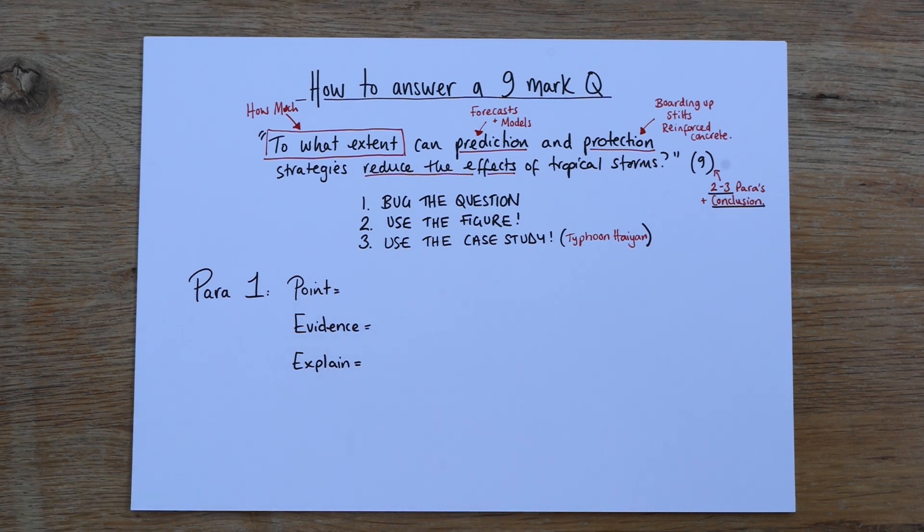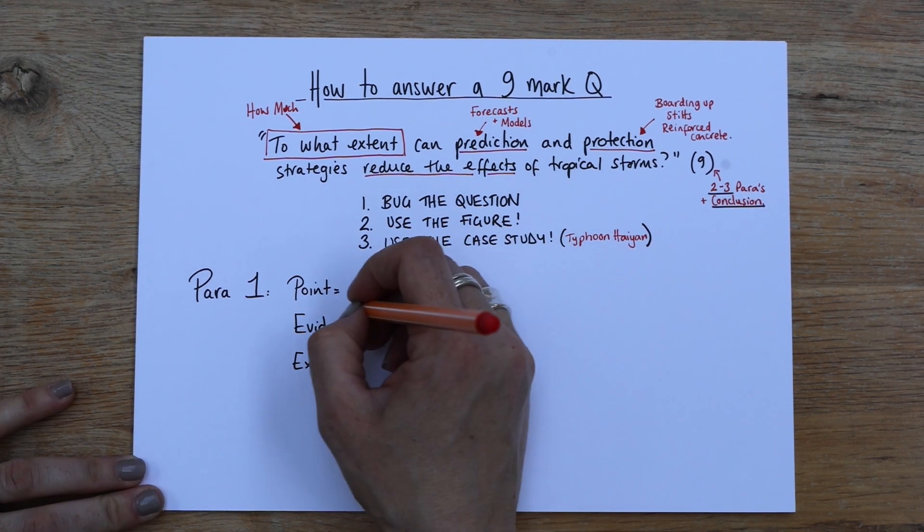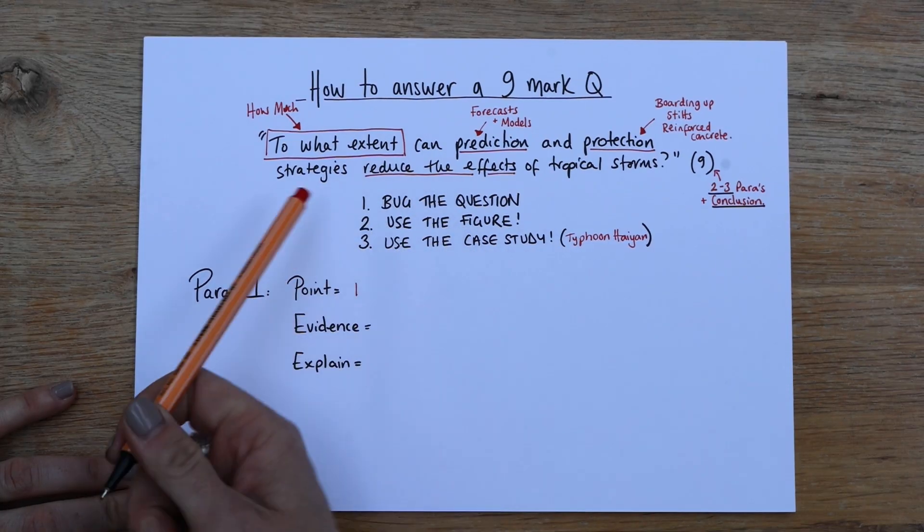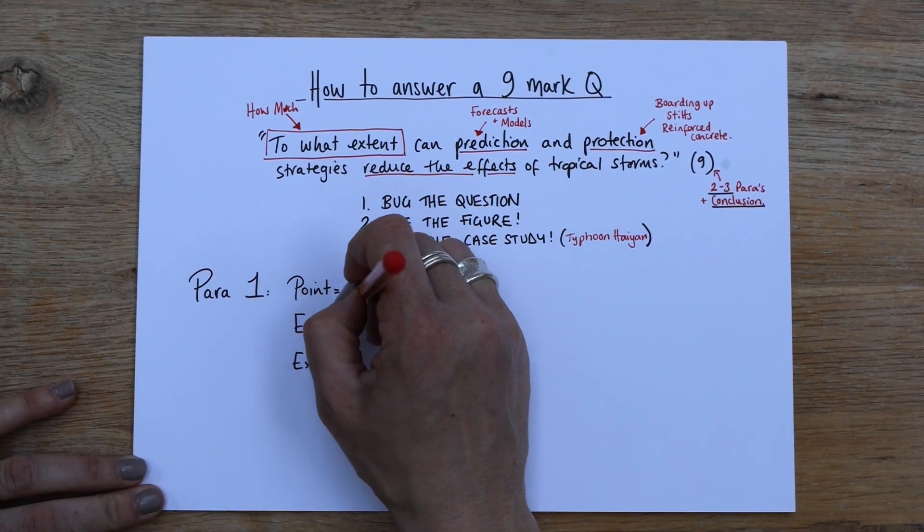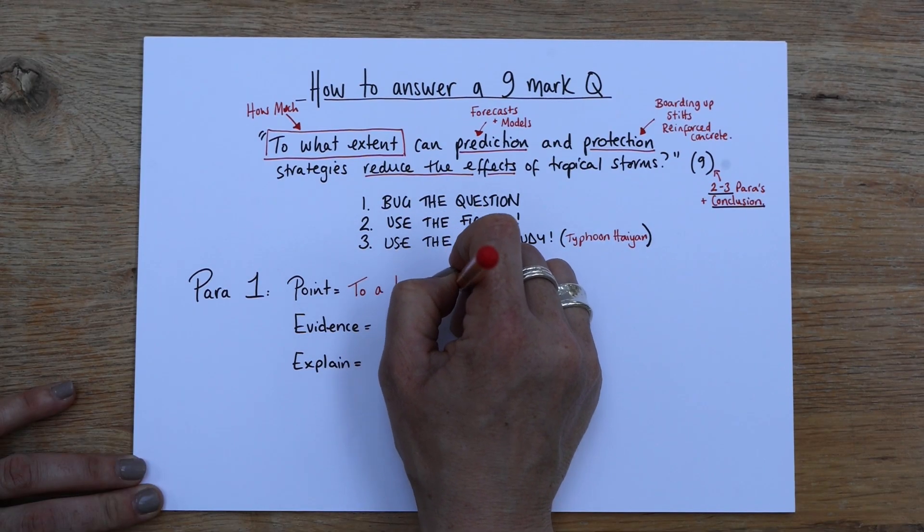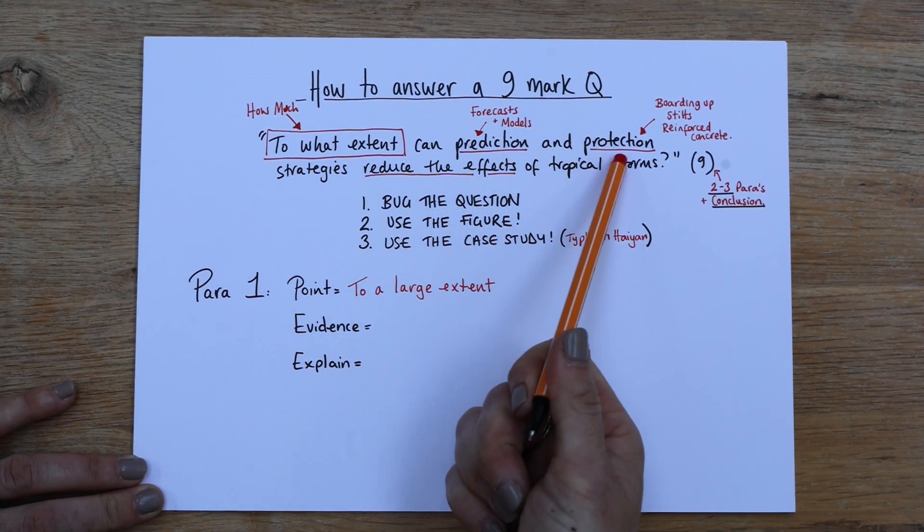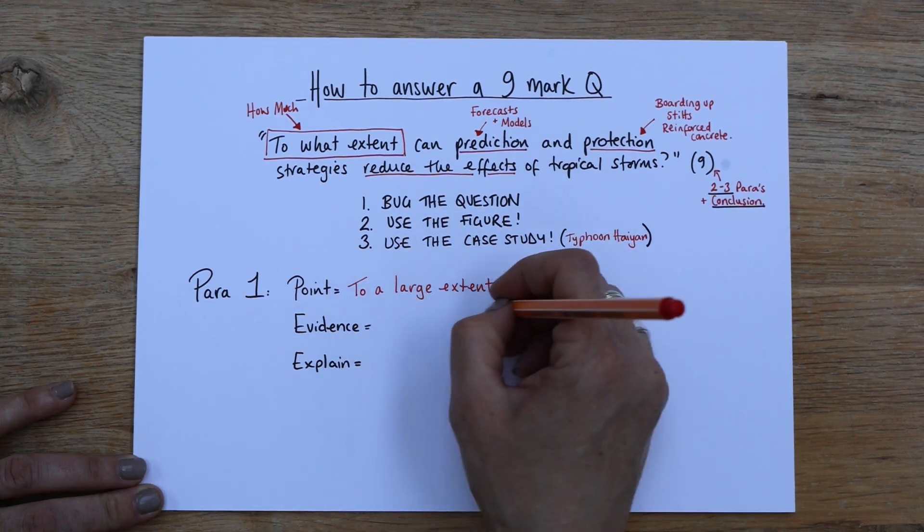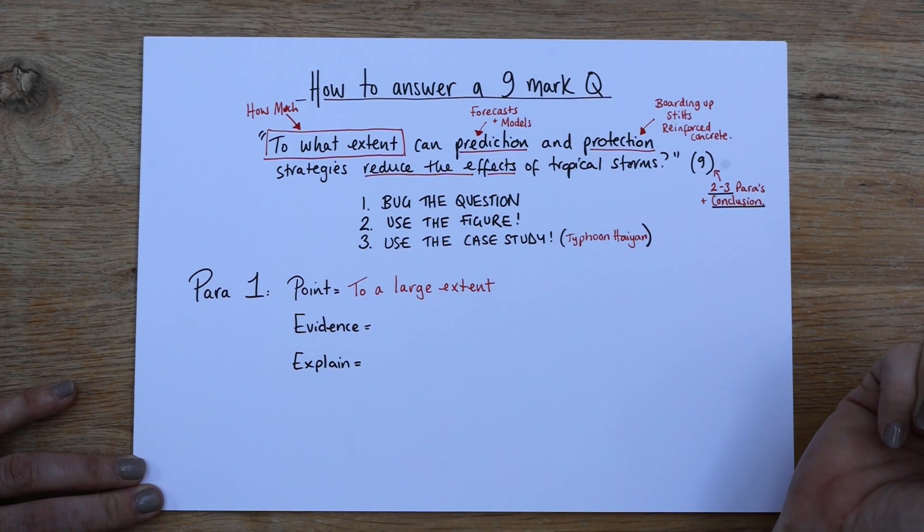And remember a point, you're just stating a fact, you're not using evidence at this point. So you would just want to say, use the words in the question. So to a large extent, and it is a large extent, so we know if you use these methods, you can save lives. So to a large extent, which one should we start with? Prediction?